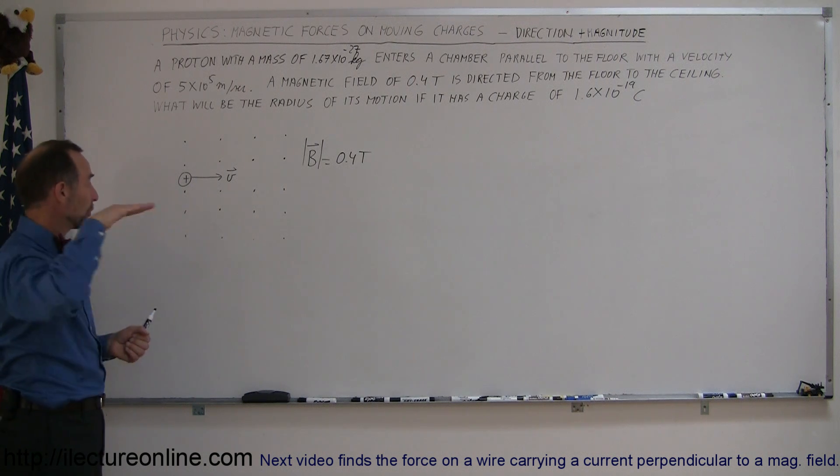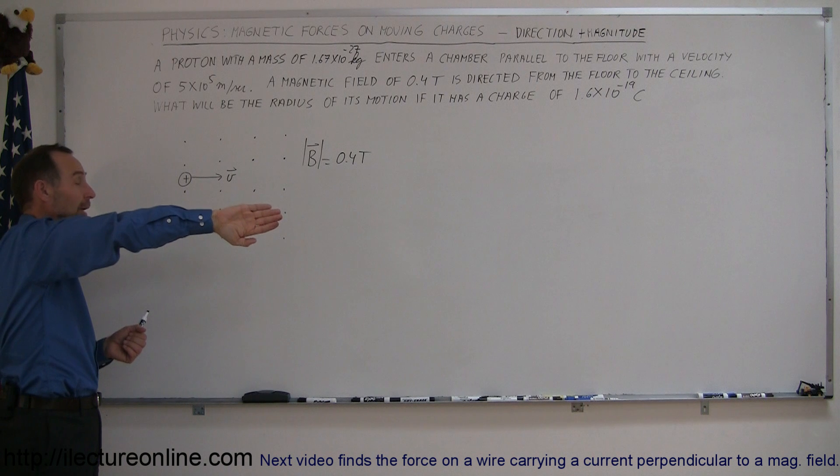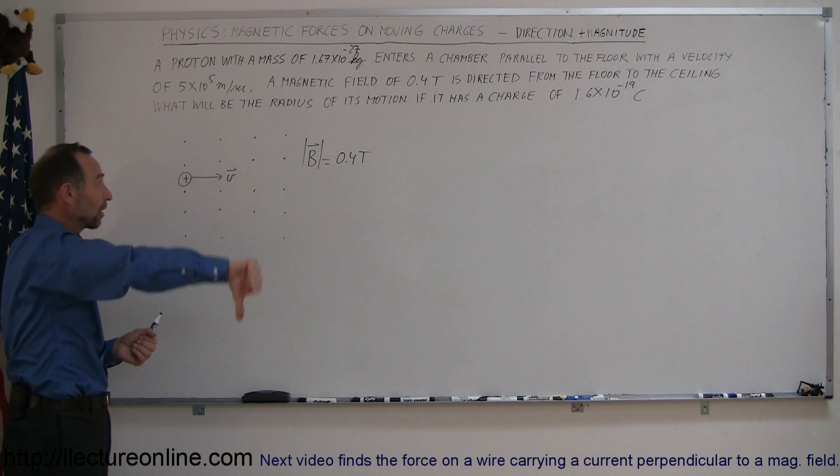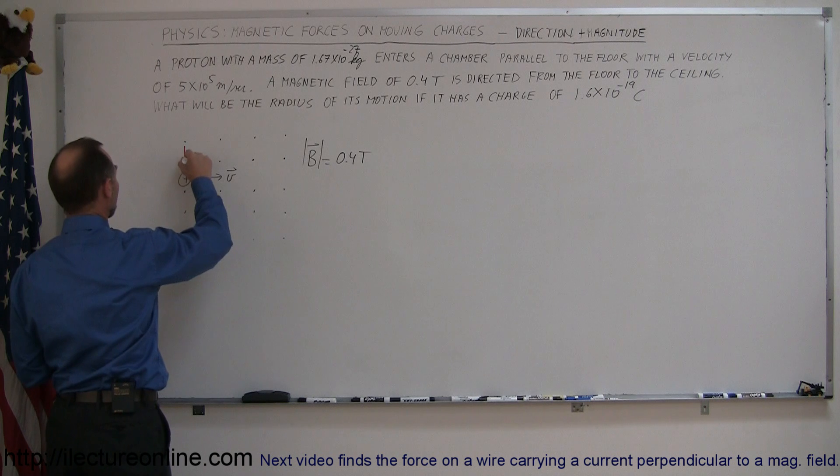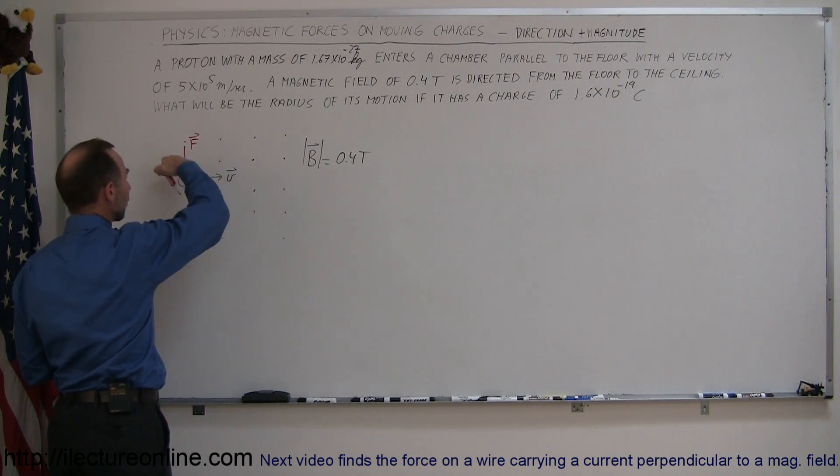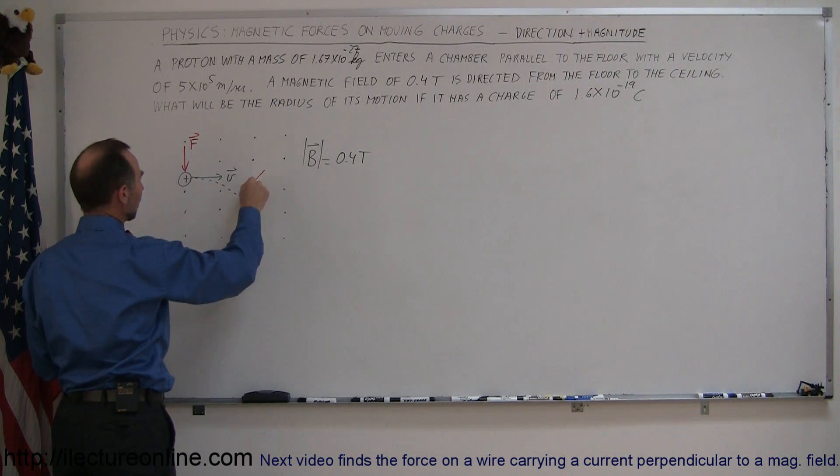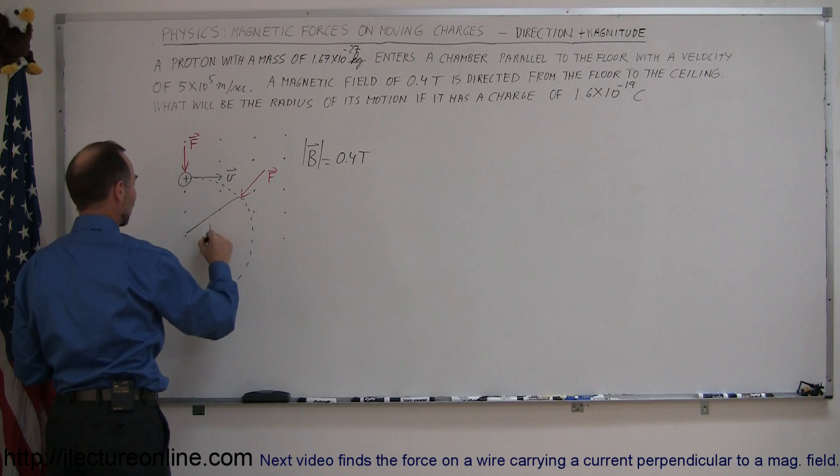So you use your right-hand rule. You point your fingers in the direction of the velocity, and then you move your hands in such a way that you can curl your fingers in the direction of the magnetic field, and your thumb will point in the direction of the force. So in this case, the force will be downward, like so. Now the force is going to deflect the particle, the particle is going to start moving like this, and of course, since the force continues to act perpendicular to the motion of the particle, it will continue to deflect it in a circular path. And so the question is, what is the radius of that circular motion?